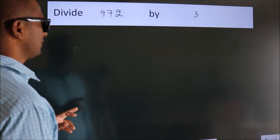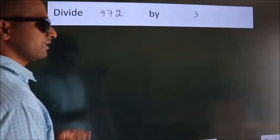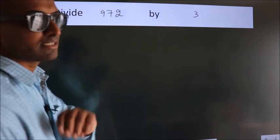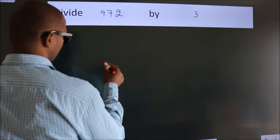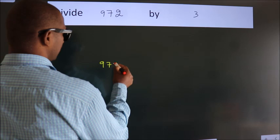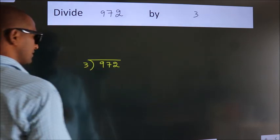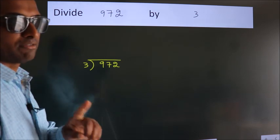Divide 972 by 3. To do this division, we should frame it in this way: 972 here, 3 here.